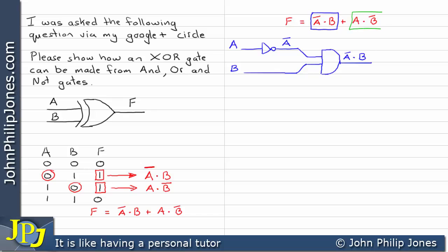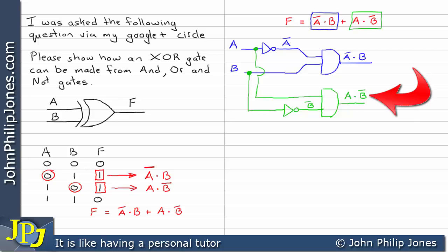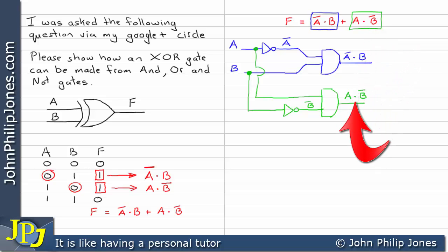For the next min term, A AND NOT B, I take a tap off A and put that as an input to an AND gate. Then I take a tap off B and put it through a NOT gate. The output of the NOT gate is NOT B. So the inputs to the AND gate are A and NOT B, giving the output A AND NOT B. This min term has now been produced at this point in the combinational logic circuit.